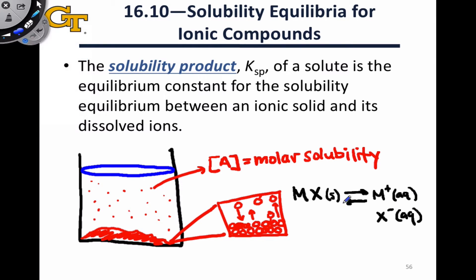So we can kind of color code this given our previous drawing. The reverse direction is the precipitation process, while the forward direction is the dissolution process on the molecular level.